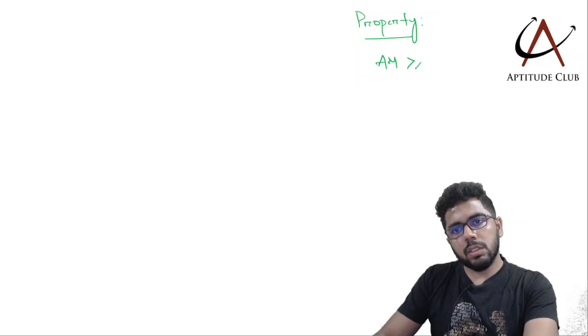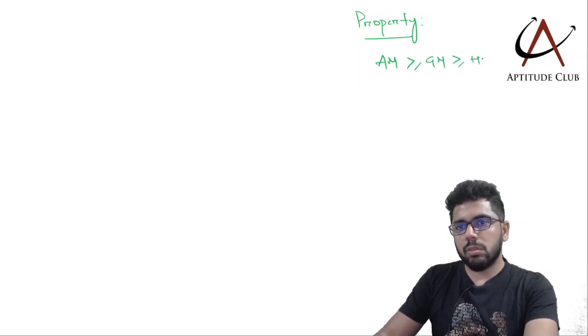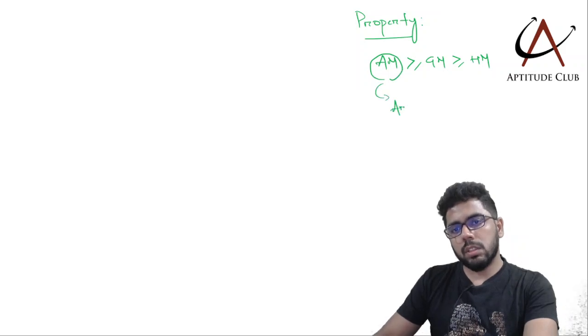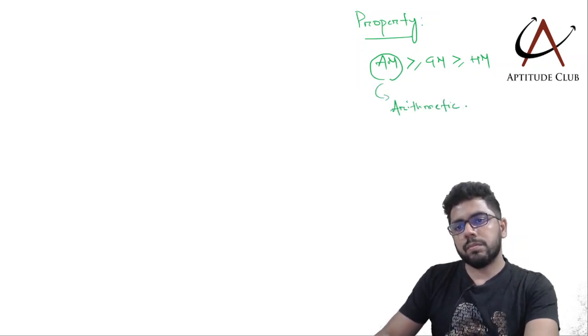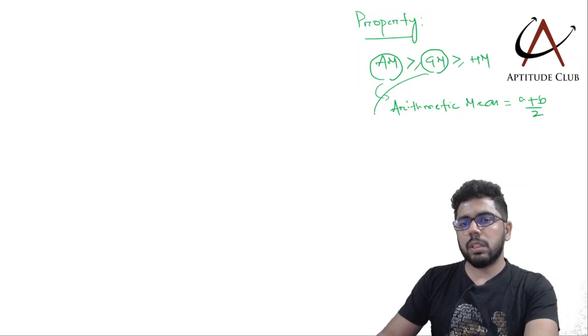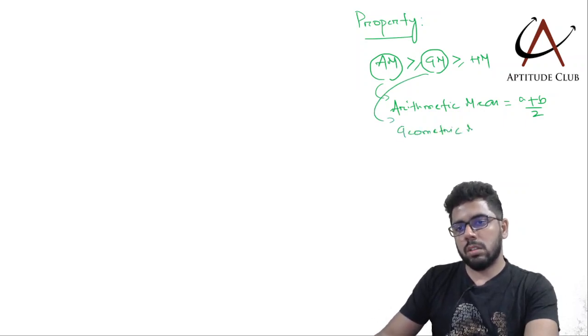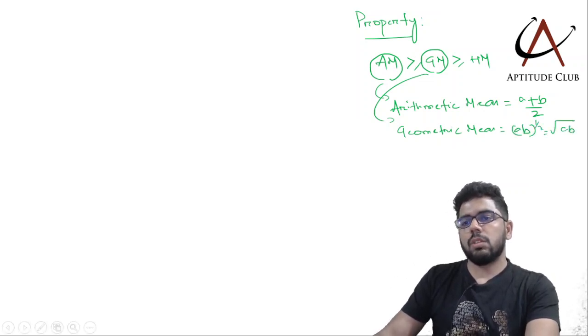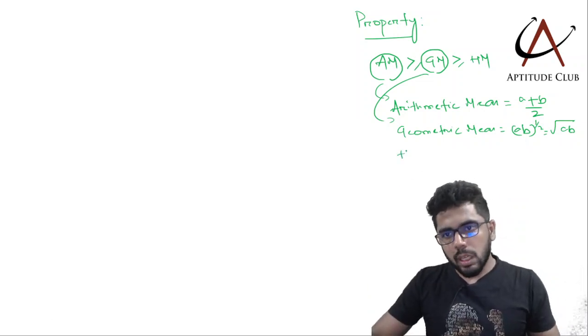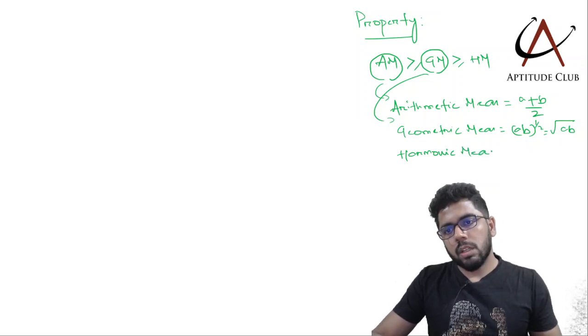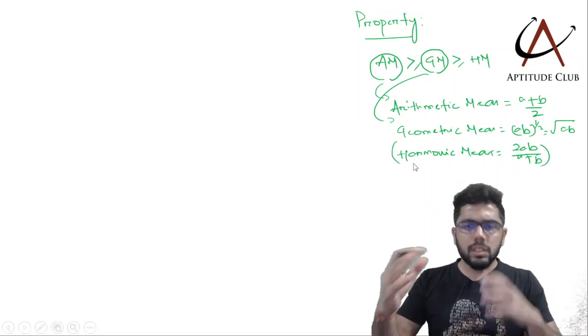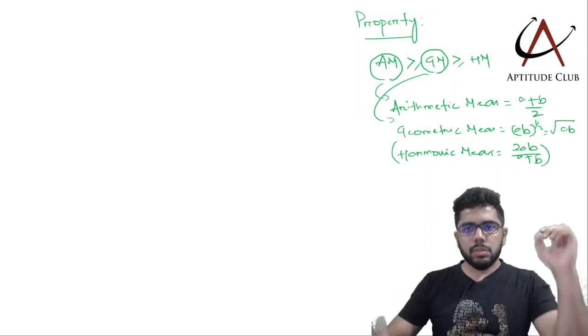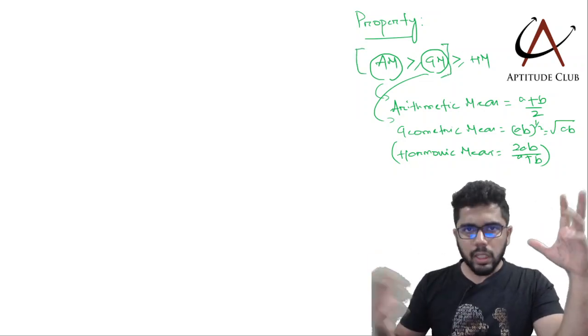Beautiful question. Arithmetic mean is always greater than or equal to geometric mean, which is greater than or equal to harmonic mean. The arithmetic mean of two things A and B is (A plus B) divided by 2. This is greater than or equal to the geometric mean, which is square root of AB or AB to the power half. The harmonic mean is 2AB divided by (A plus B). I will talk about these different types of means in some other video, but in today's video we are using this property: arithmetic mean is greater than or equal to geometric mean.